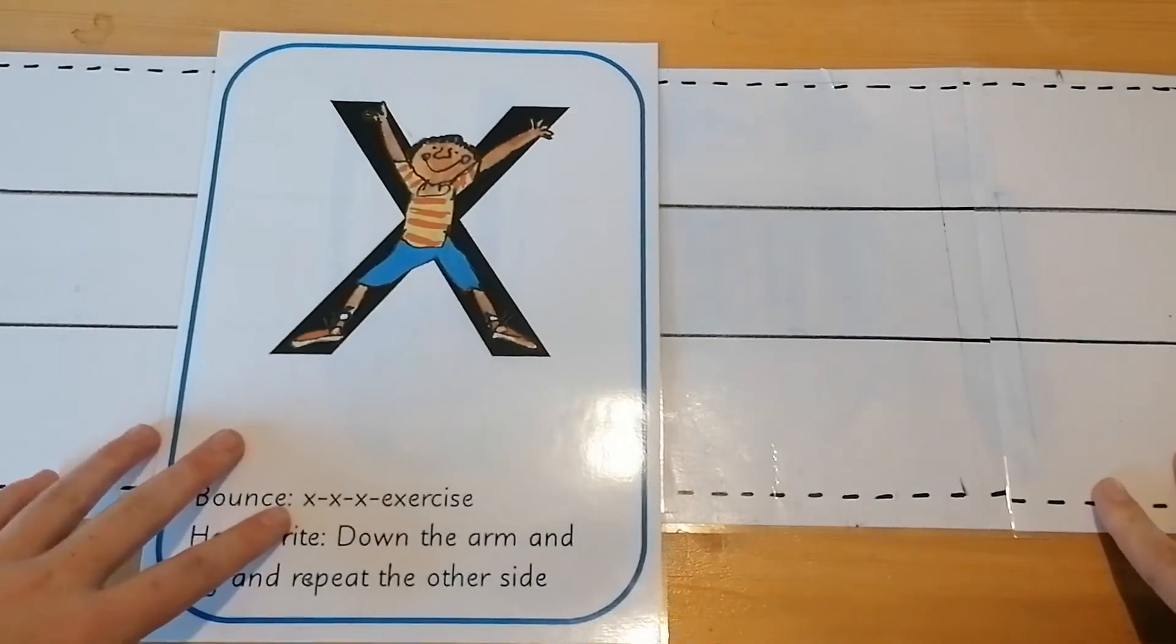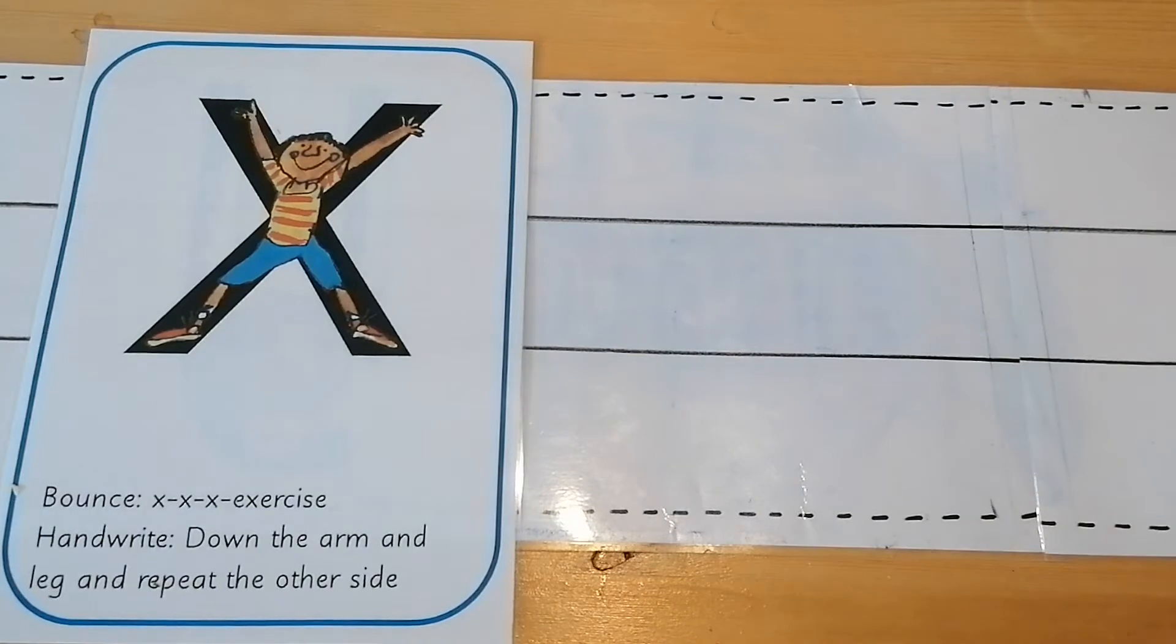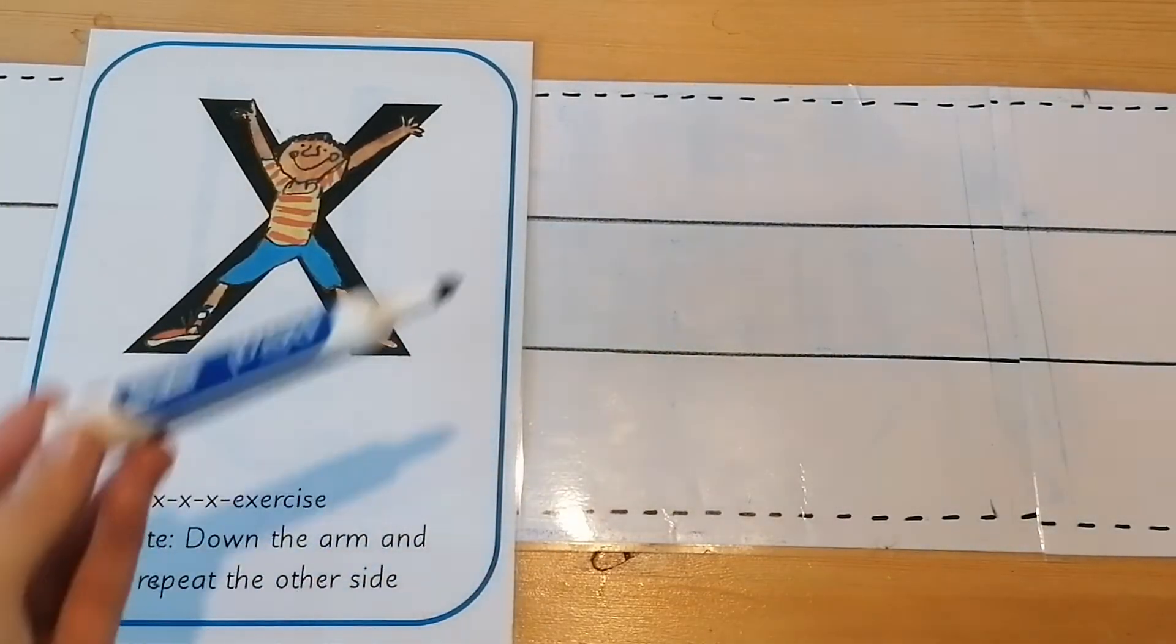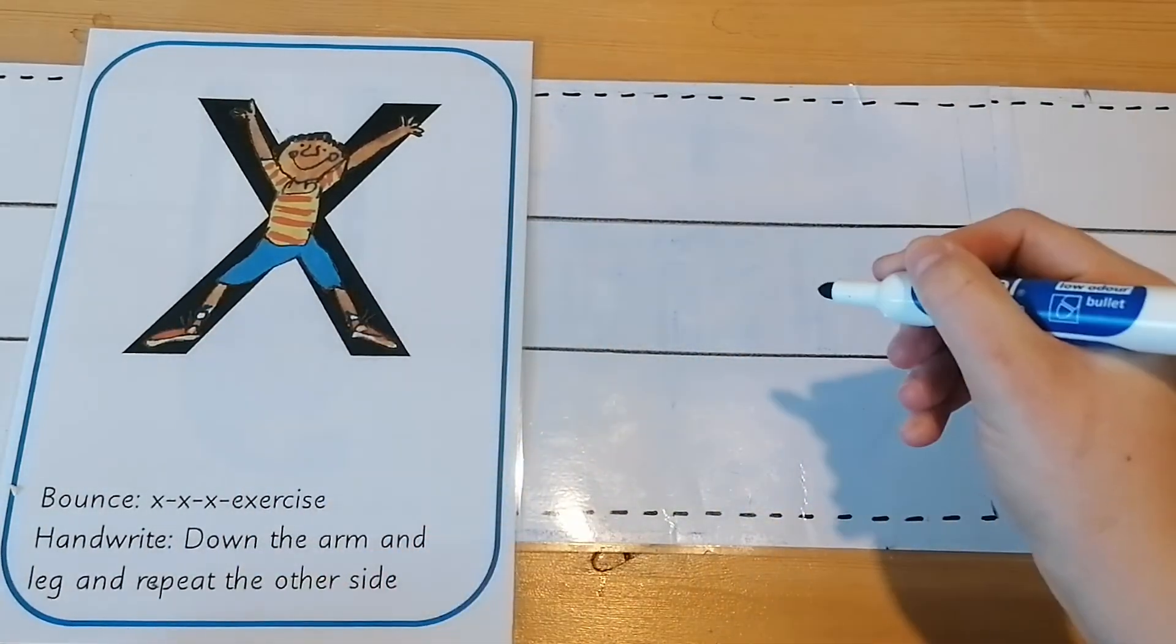Okay, to do some proper handwriting today you're going to need to sit really sensibly in your chair. Your bottom should be back in your chair, your tummy should be towards the table and you need to hold your pencil correctly using proper pencil grip. You're going to snap it, flip it and grip it.